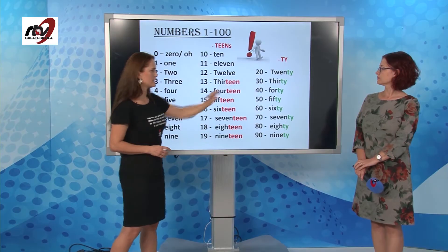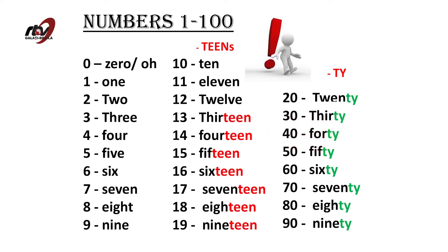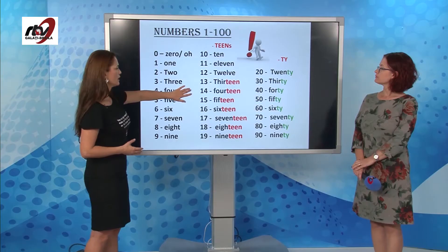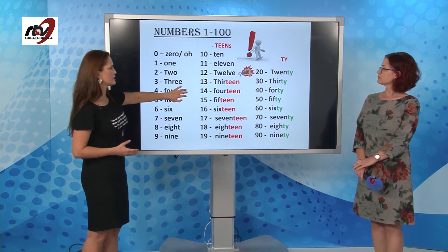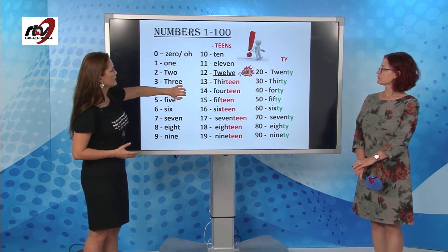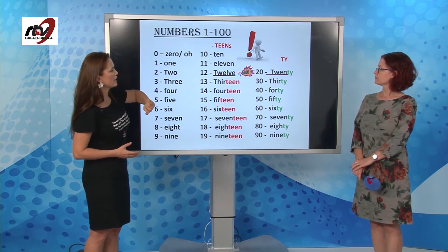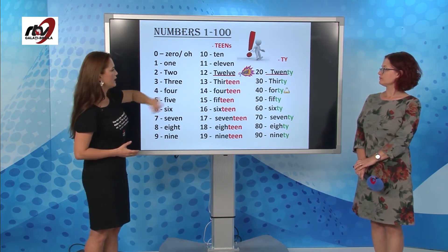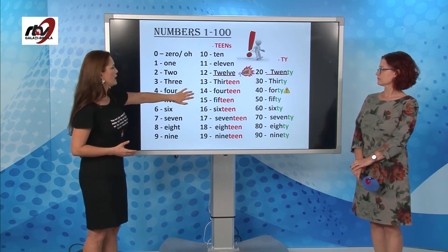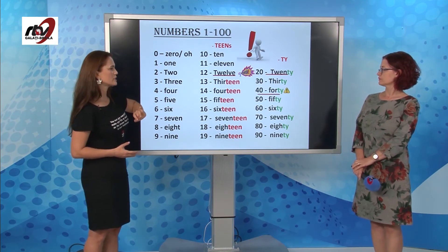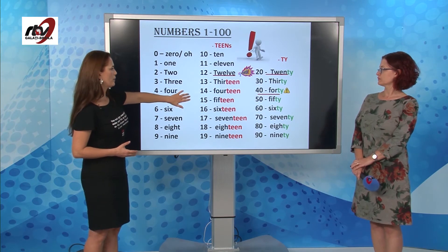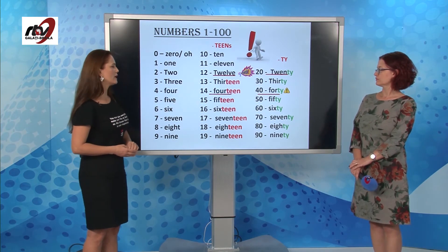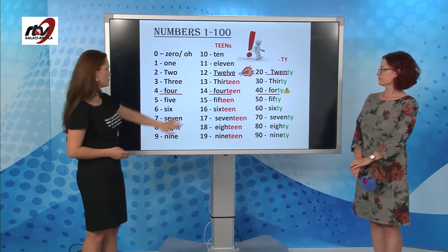Twenty, thirty, forty, fifty, sixty, seventy, eighty, ninety. One of the most common mistakes is between twelve and twenty — a lot of students mix them up. You should also pay attention to forty: it is written without a U. But fourteen has a U, and so does four.